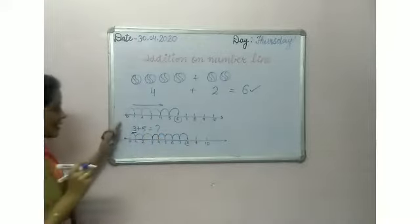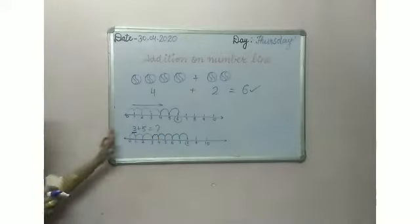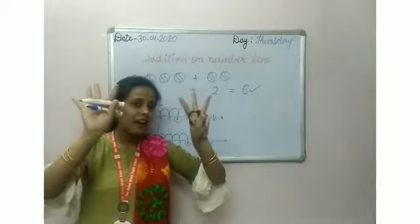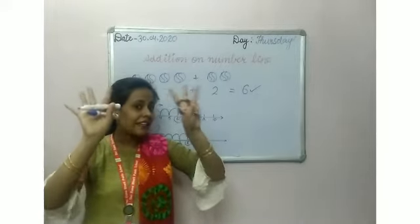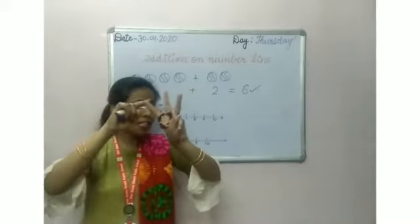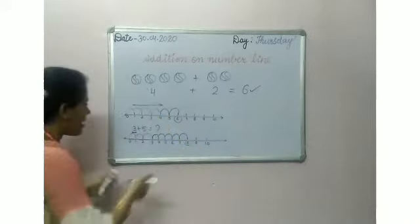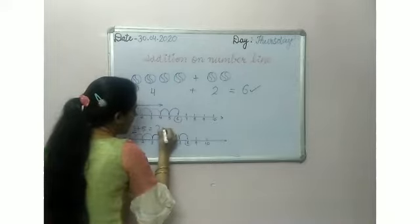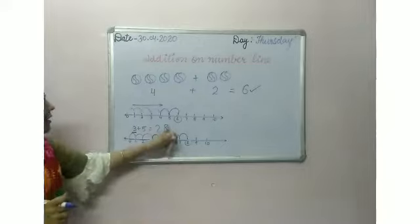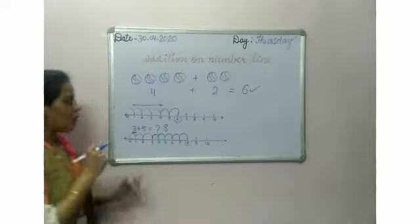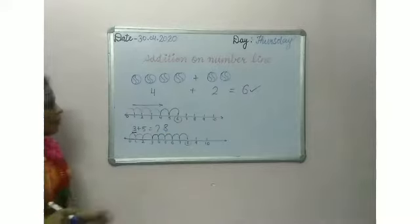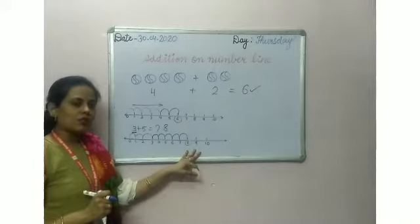Here also we will see three plus five. I have three fingers in my left hand and five fingers in my right hand — five, six, seven, eight. My answer here is also eight. Understood, children? This is the number line. We can get the same answer on the number line as in addition. I hope you understood number line.